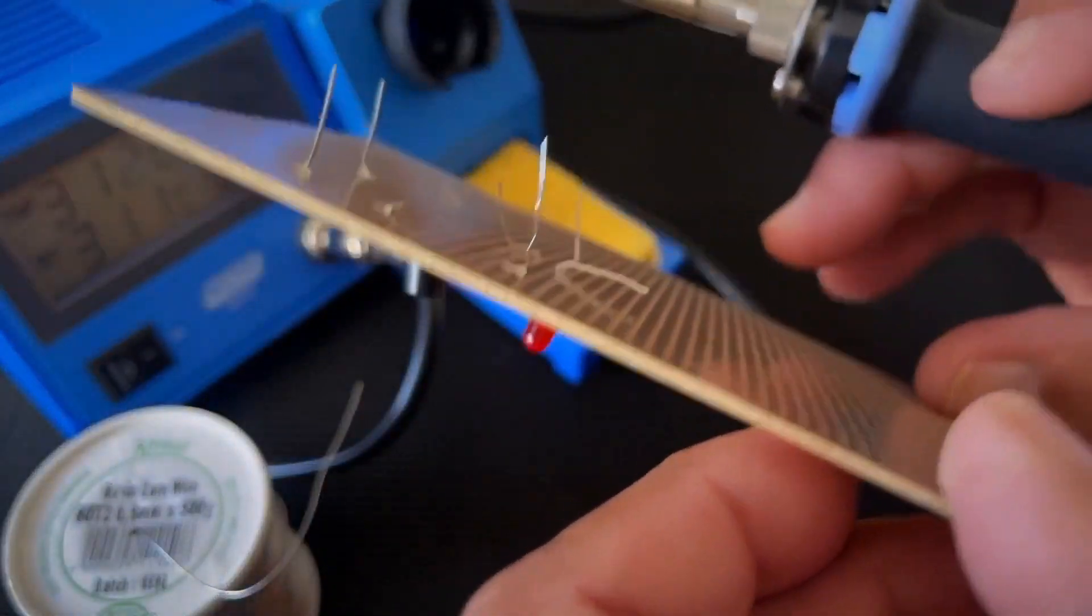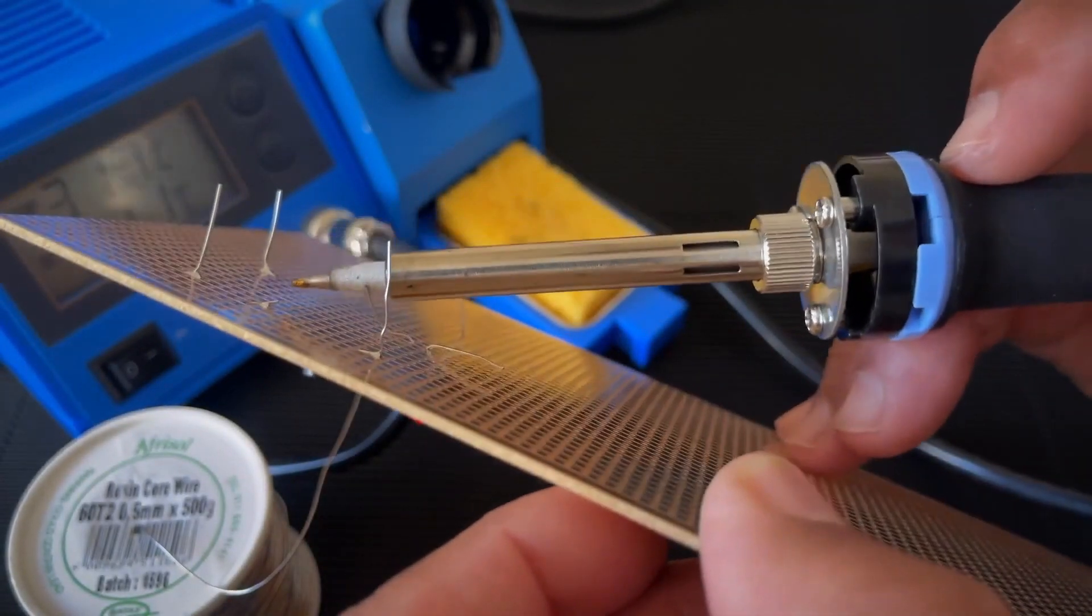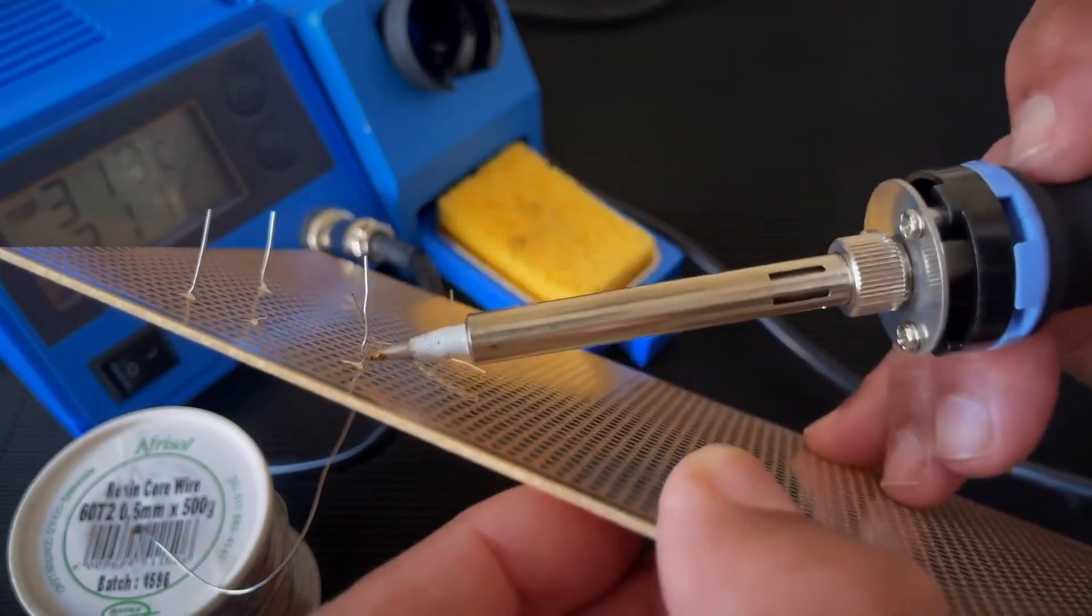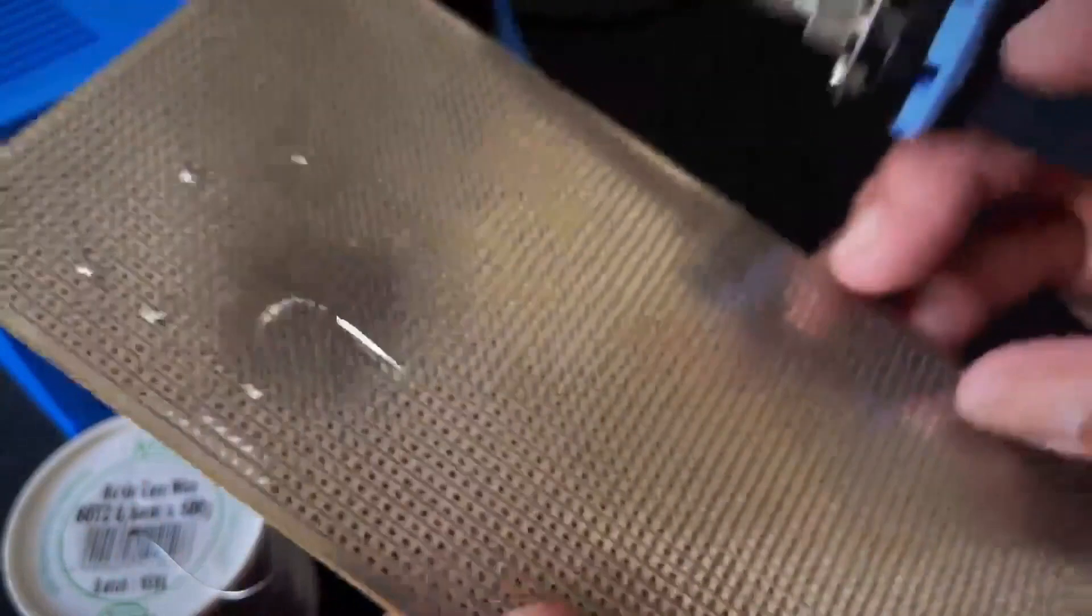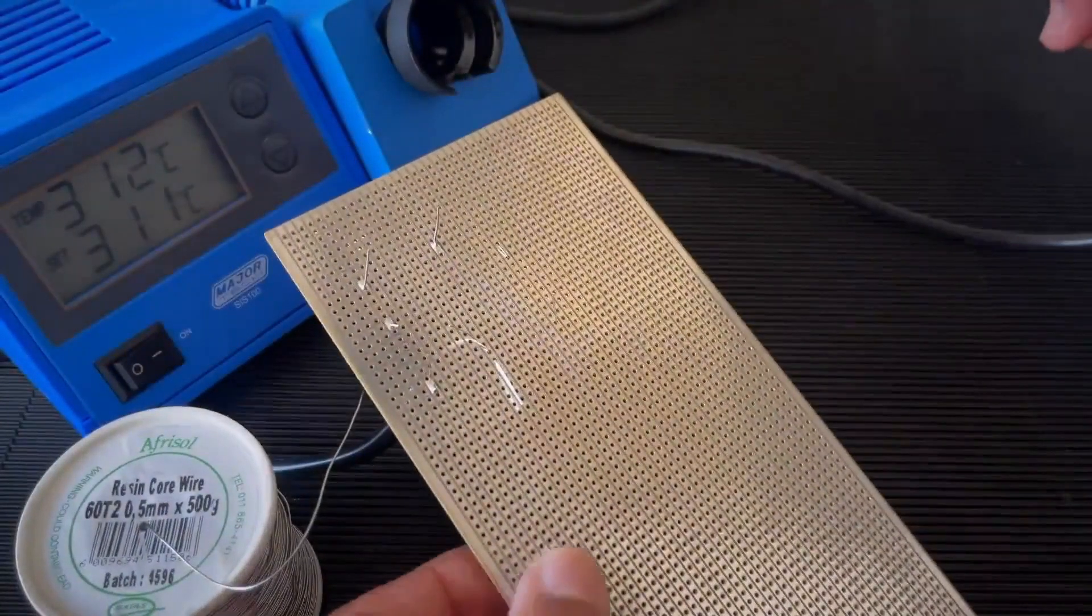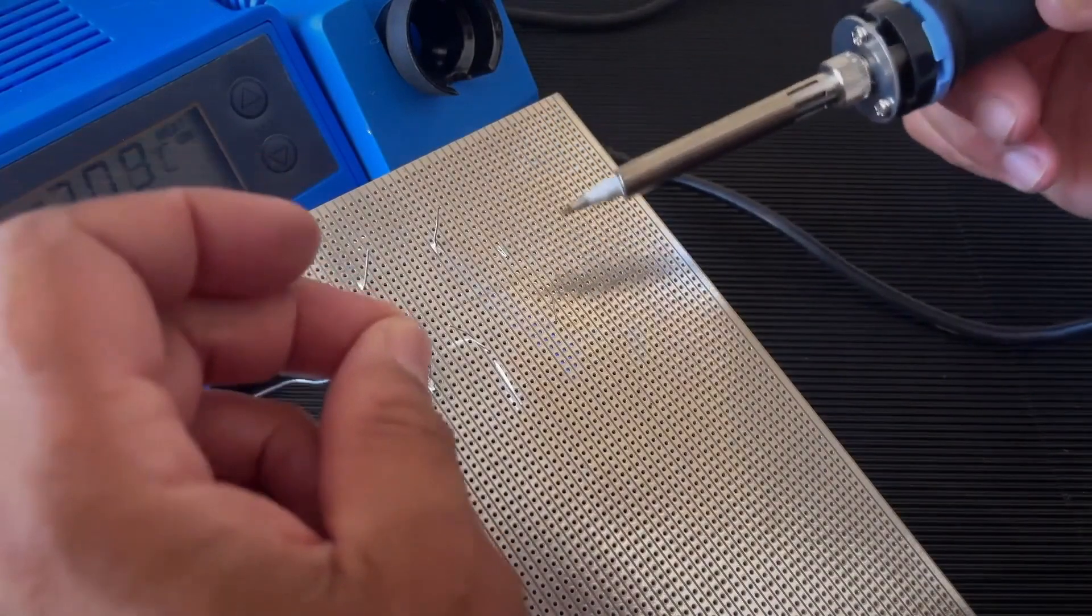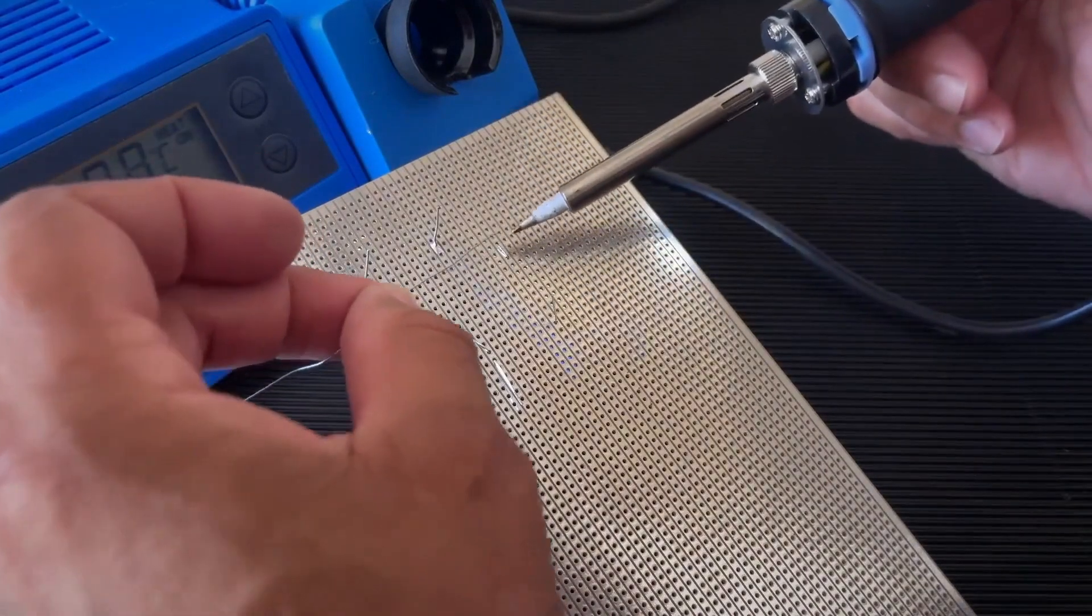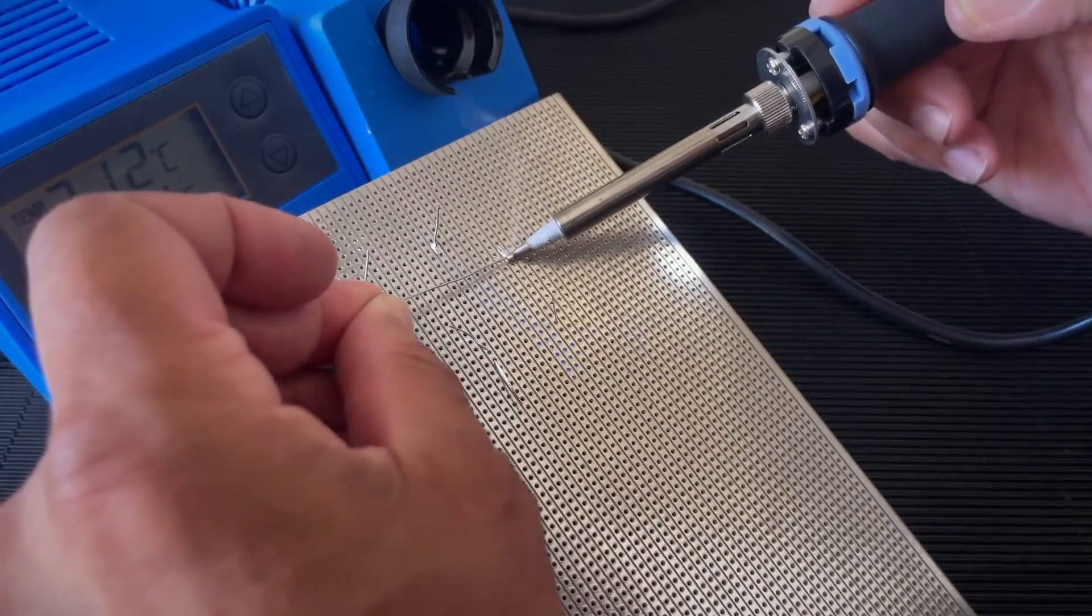Again, also when you solder, stay in the track or on the track. In other circuits, you will definitely have more components where they are very close to each other. And it is easy to make a mistake where the tracks or the tips are so close together and it would then make contact.